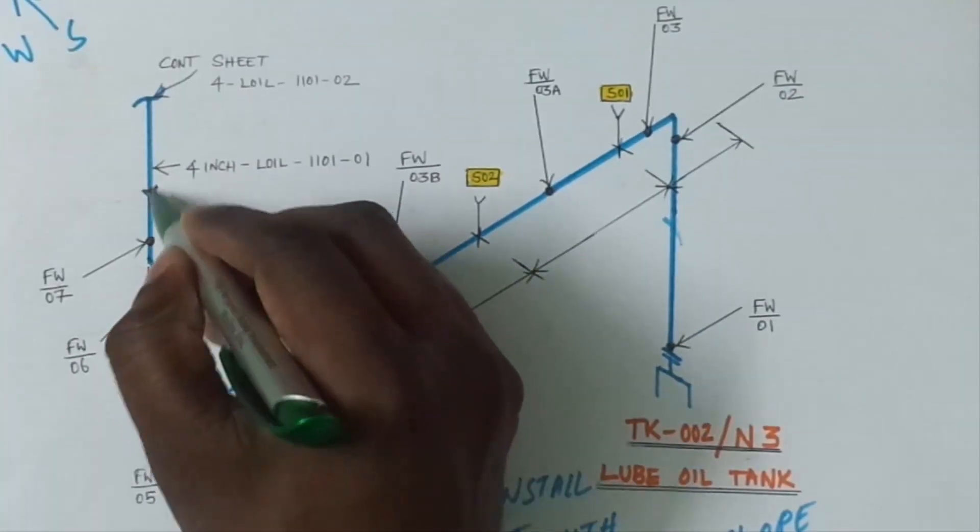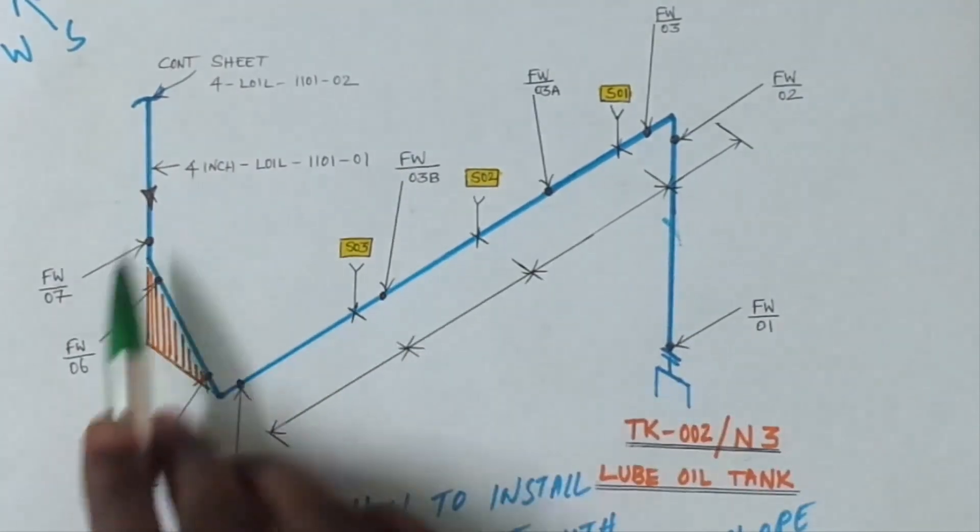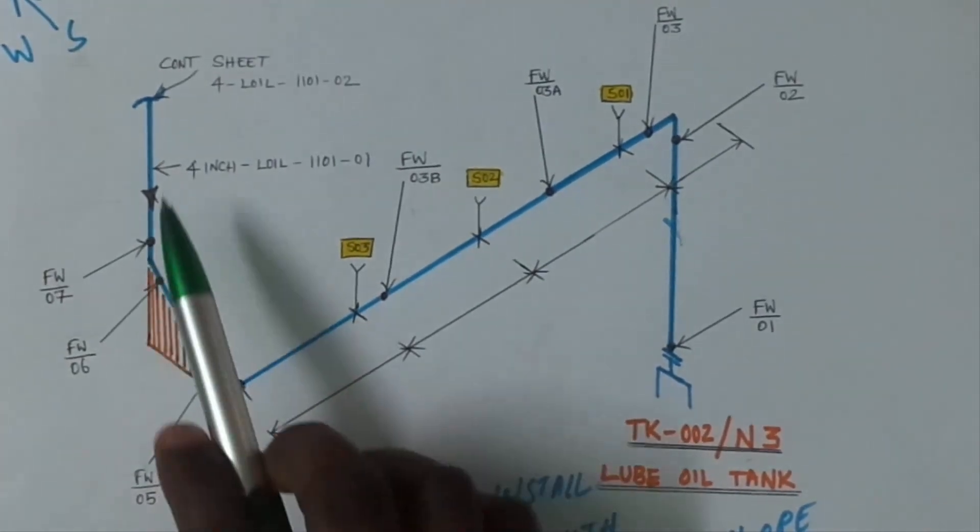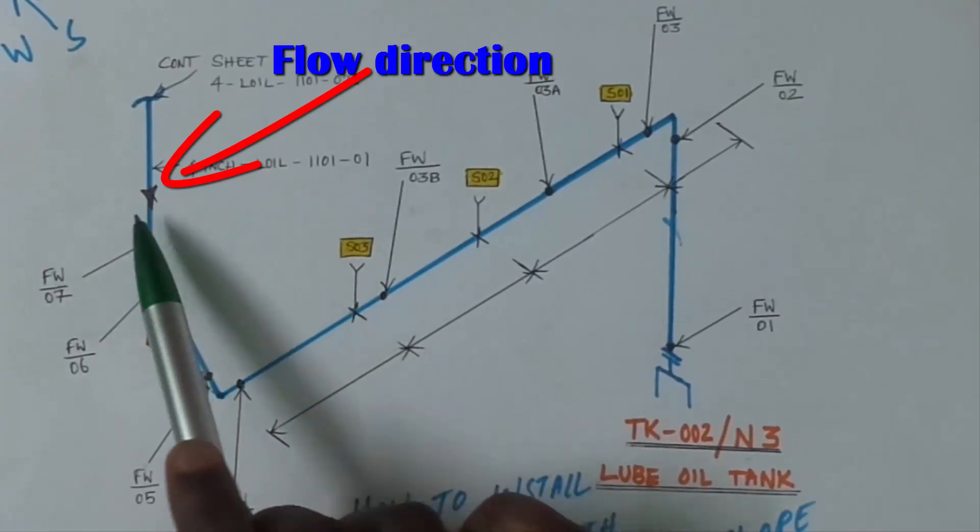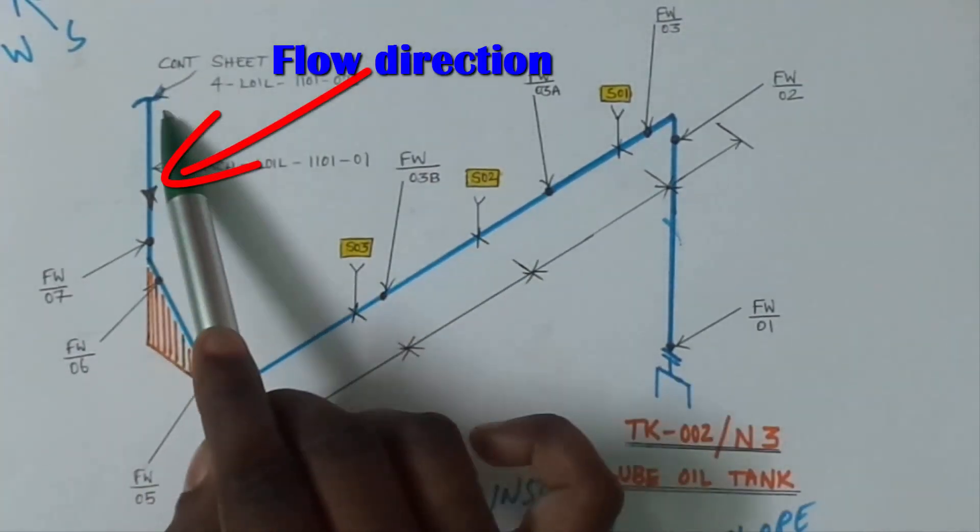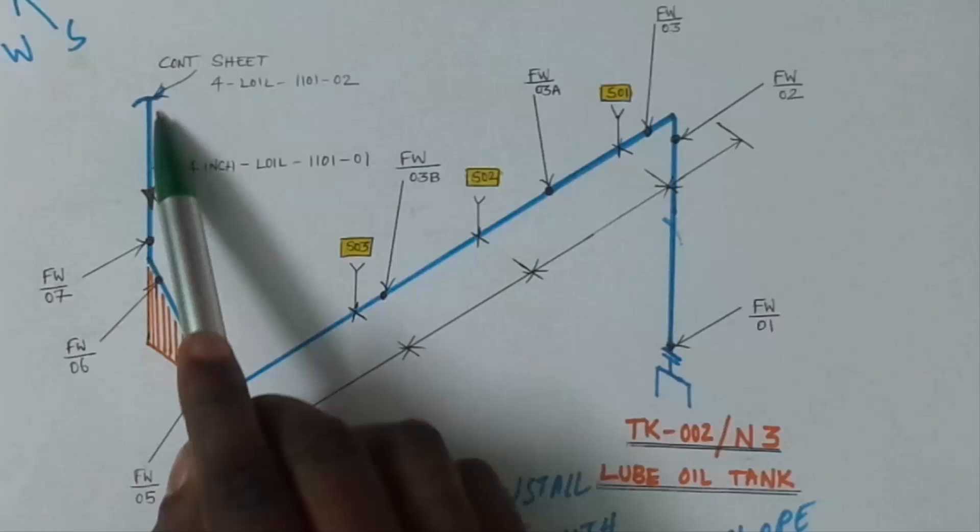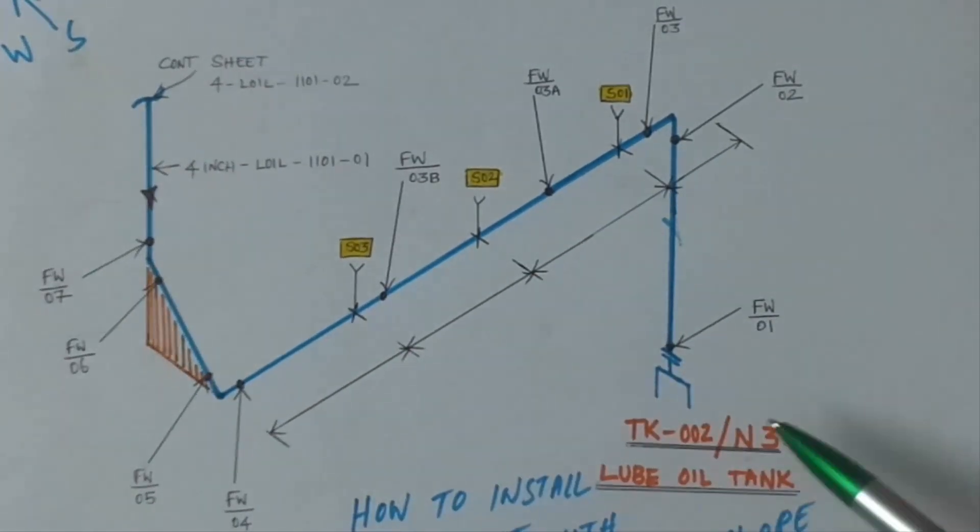This line is coming from some pump drain or seal leakage, some wastage oil, transformer wastage oil—all lines are connected with this pipeline. Then after that, this line is going to the lube oil tank, which is a wastage collection tank.